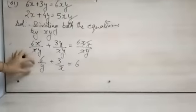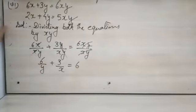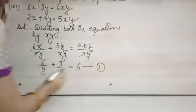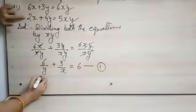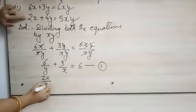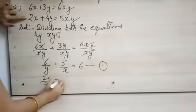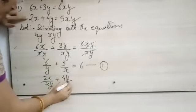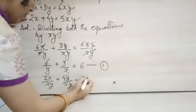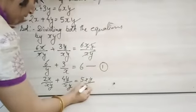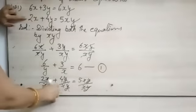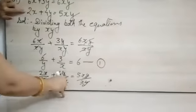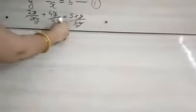Though we have reduced this, it is not the simplest form of equation, so we will name it equation 1, but this is not the required equation. Similarly the second equation, we will divide it by xy. 2x upon xy plus 4y upon xy is equal to 5xy upon xy. After cancellation, it became 2 upon y plus 4 upon x is equal to 5. We will name it equation 2.